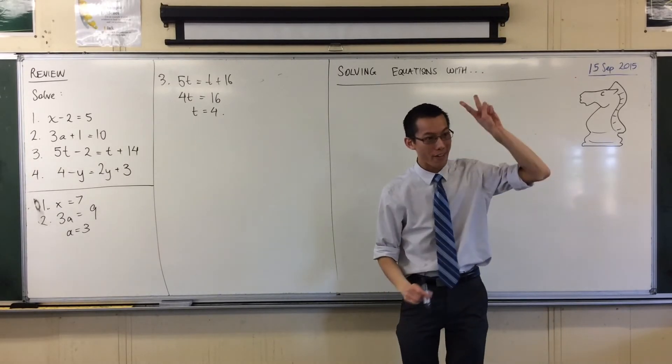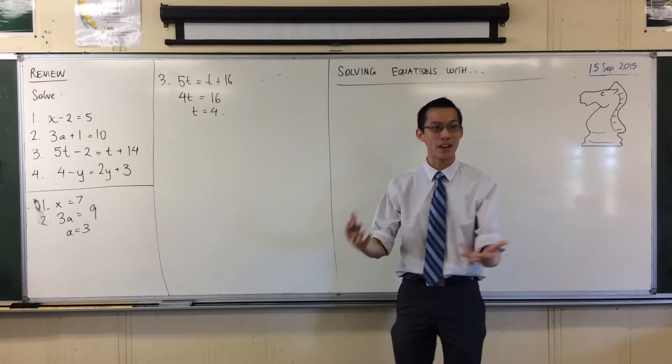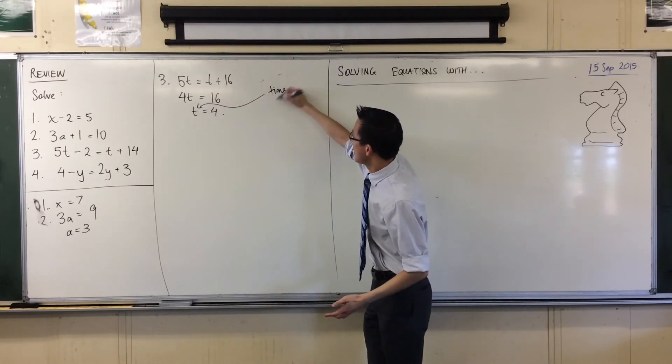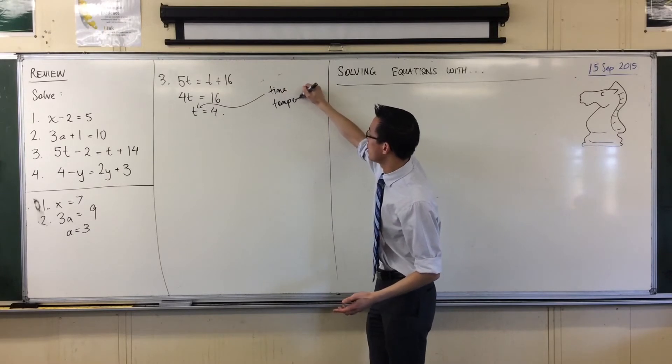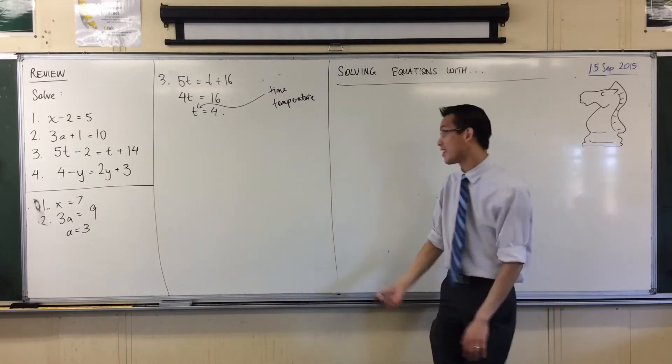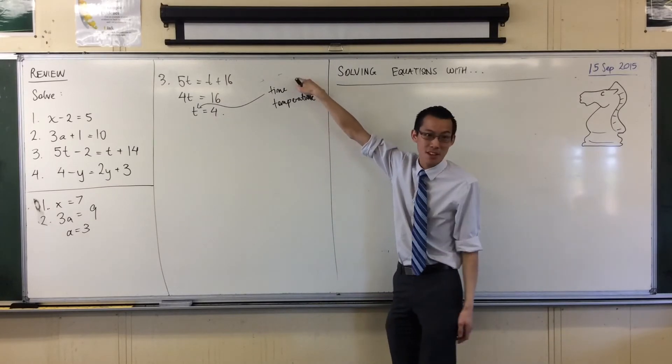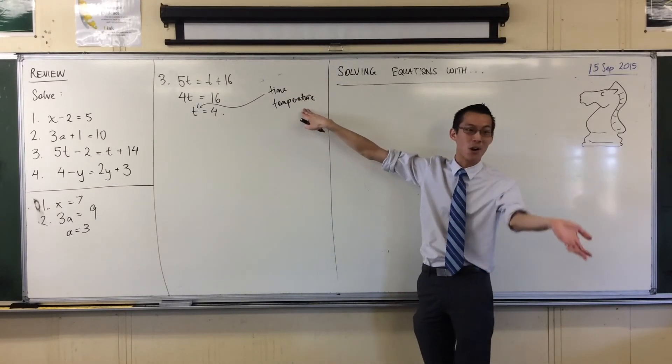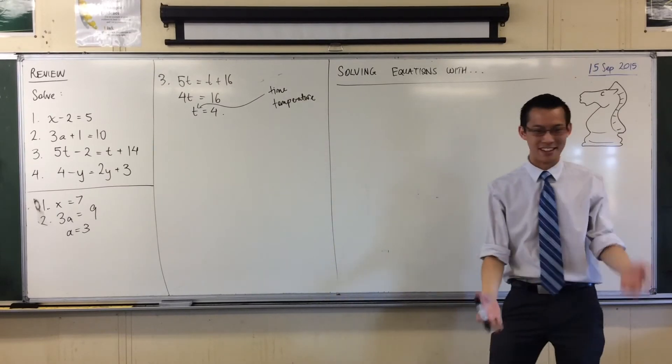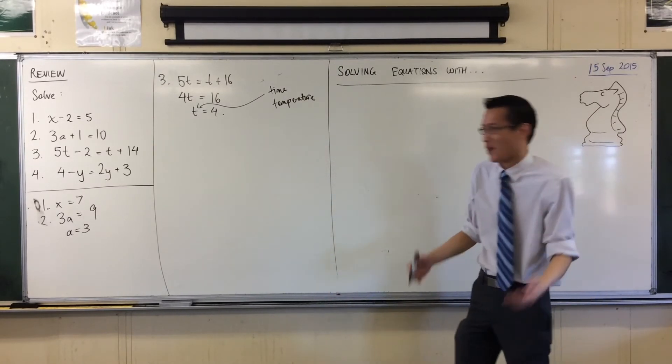Two very common numbers you want to work out are time and temperature, both of which start with T. So when people are writing equations and like, I want to find out when something happens, I want to find out how hot or cold it is, they'll just use T.